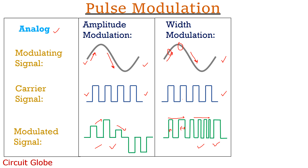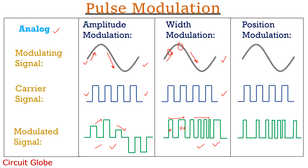Let's now proceed towards pulse position modulation, abbreviated as PPM. This is our modulating signal, this is the carrier signal, and this is the modulated signal. A PPM signal is basically derived from a PWM signal, where the trailing edge of the PWM signal serves as the rising point of the pulses of the PPM signal. This simply indicates that at each trailing edge, a pulse of PPM signal with the same width and amplitude of the carrier signal is started. In this way, a PPM signal is achieved.